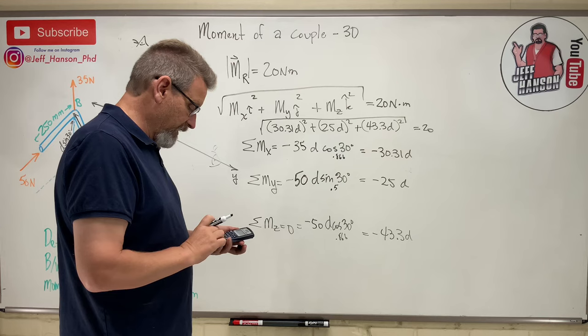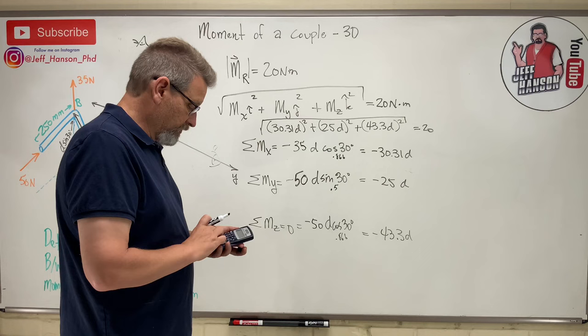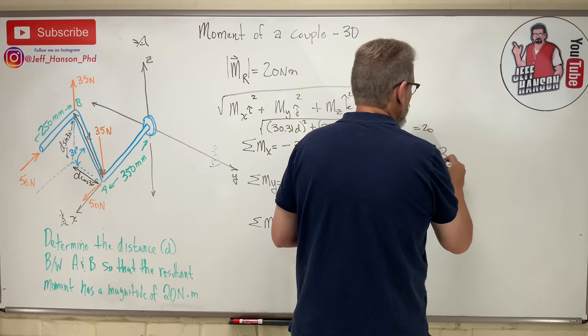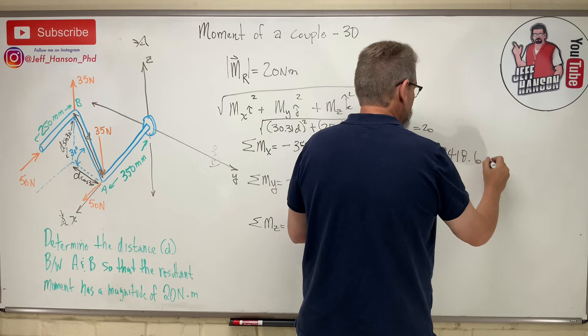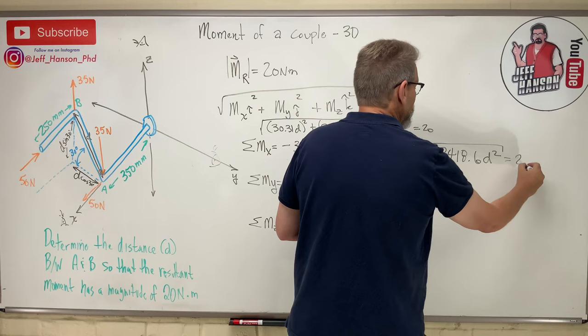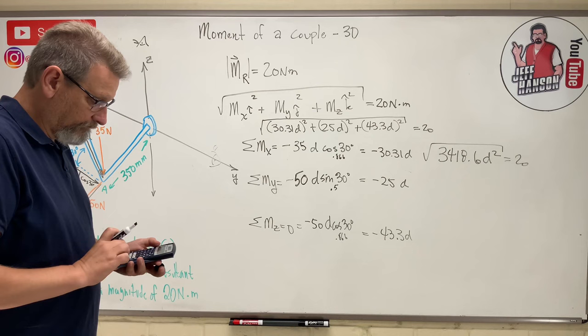So let's see: 30.31 squared plus 25 squared plus 43.3 squared. 30.31 squared equals 34.18. So that's 3418.6 d squared equals 20, and then the square root of that. Remember we can take the square root of each one of these since they're multiplied together. If they were added then we couldn't do that, but they're multiplied. So I get 58.5 d equals 20.